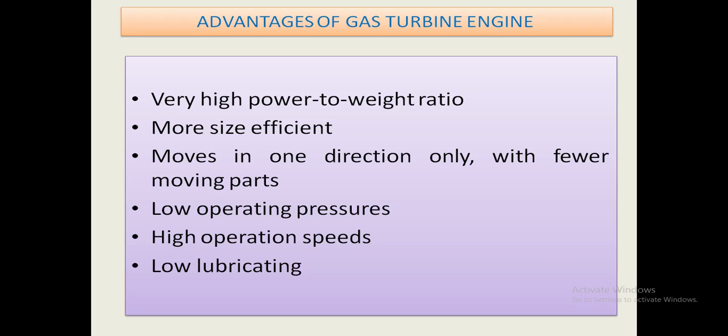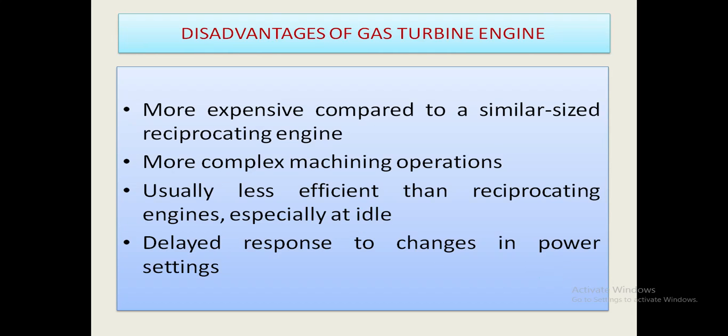Main advantages of gas turbine engine: very high power-to-weight ratio, more size efficient, moves in one direction only with fewer moving parts, low operating pressures, high operation speeds, and low lubrication requirements. Main disadvantages: more expensive compared to a similar-sized reciprocating engine, more complex machining operations, usually less efficient than reciprocating engines especially at idle, and delayed response to changes in power settings.